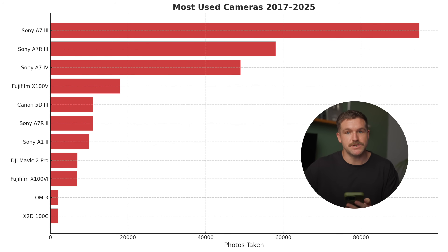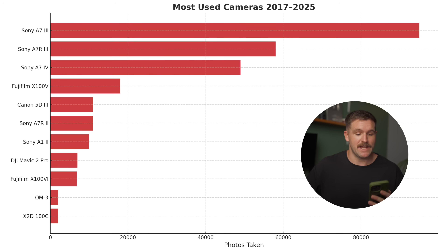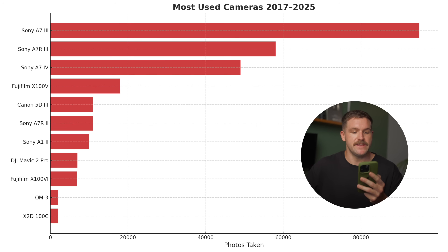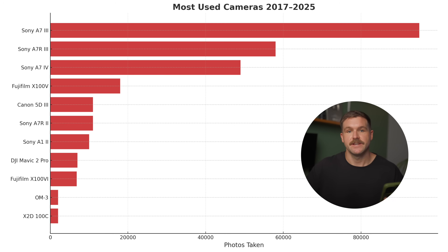Looking at my most used cameras, by far the Sony a7 III is the camera I've shot the most photos on. Some of my favorite images were shot on that camera — we were living in Bali during COVID, pretty much the only expats there, traveling to nearby islands, and shooting like crazy. Close second is the a7R III, then the a7 IV, then the Fuji X100V. I also have the Sony A1, and I think that number is going to change because that camera shoots ridiculously fast — the electronic shutter is absolutely redonkulous.